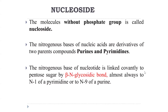The pentose sugar forms a glycosidic bond with nitrogen-1 of pyrimidine, or nitrogen-9 of purine. This is an important distinction to know.